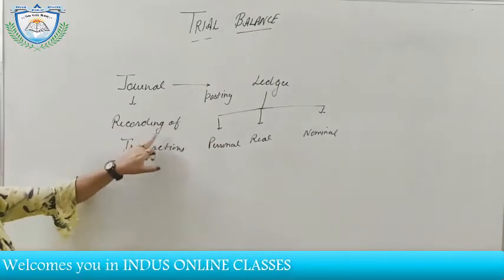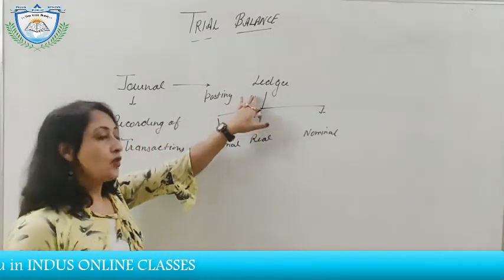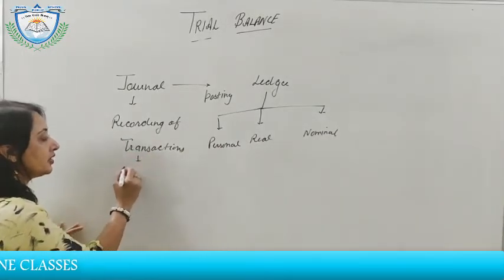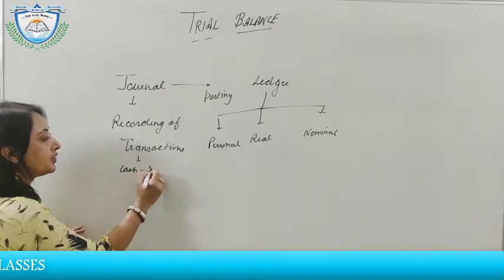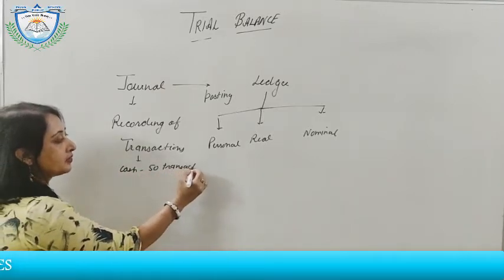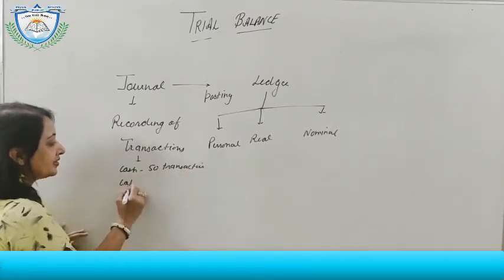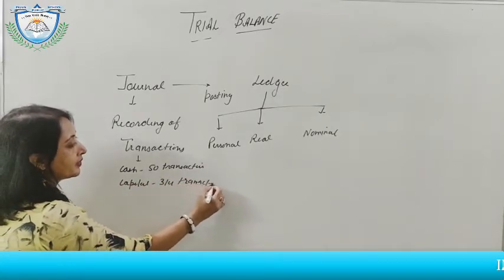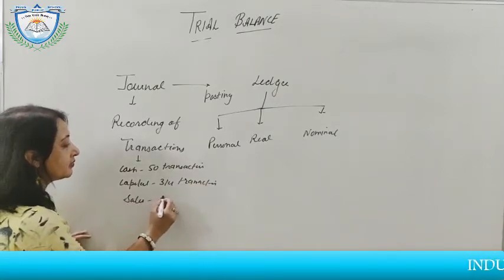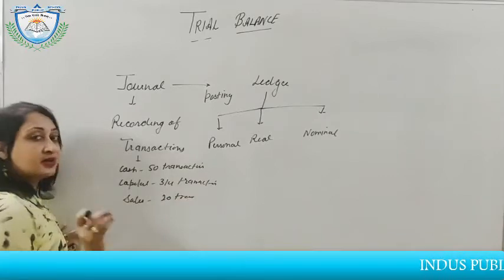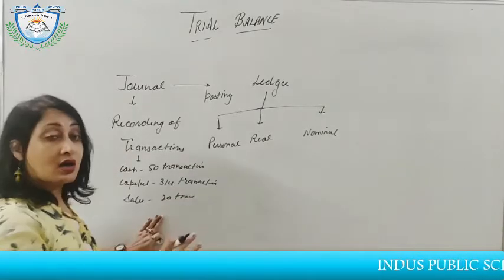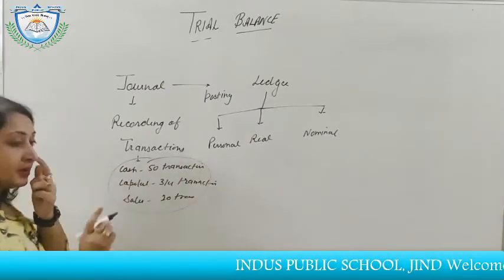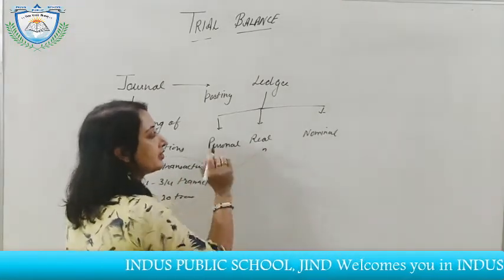The job of the journal is to record transactions. In the ledger, we classify the transactions. For example, if there are 50 cash-related transactions in the journal, and 3 or 4 capital-related transactions, and say 20 sales and purchase transactions — we still make a single account under the ledger.